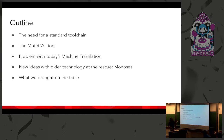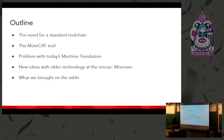Today the outline is as follows: we start with the need for a standard toolchain for translating and localizing software projects. Then I'll talk about the CAT tool I'm bringing today, which is MateCat. Then what's the problem with today's machine translation, which is the most fundamental supporting system for a translation pipeline, and what is the solution coming to the rescue.